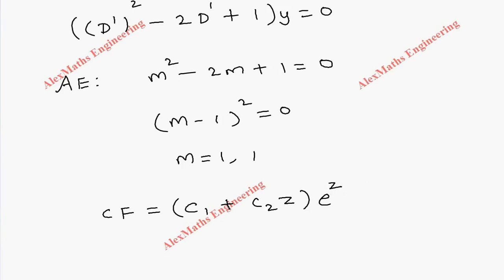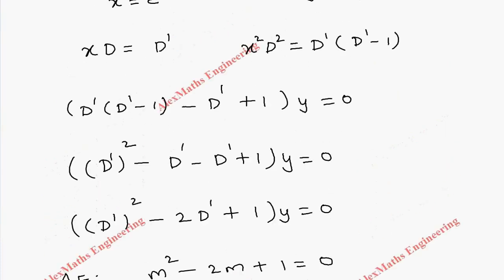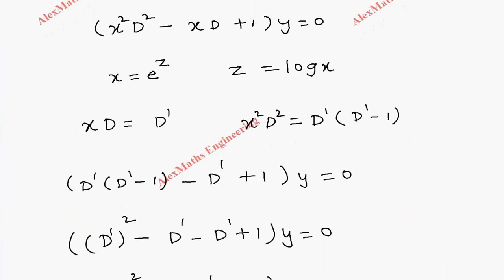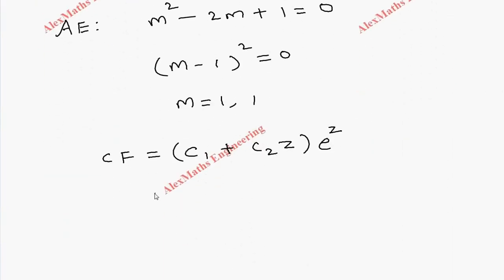After that we have to replace z, which is log x, and e^z is x. So we replace and get c₁ + c₂·log(x), the whole bracket times x.